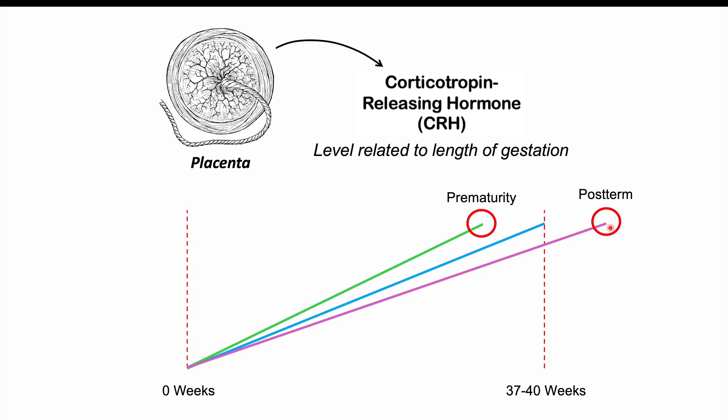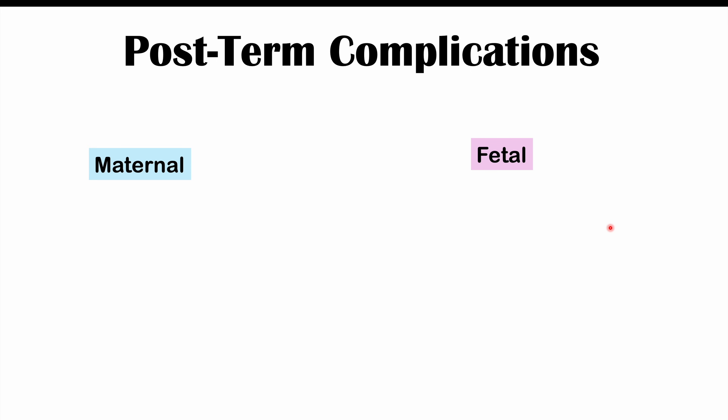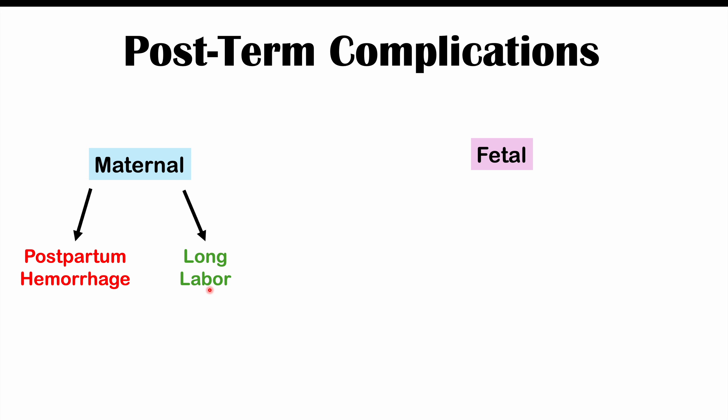Placental CRH is likely involved in fetal growth and fetal brain development, and its levels are correlated with when an infant is likely to be delivered. Regarding post-term complications, maternal complications include postpartum hemorrhage, prolonged labor, perineal tearing — because the infant becomes larger, causing more damage during delivery — and shoulder dystocia, the incidence of which also increases in mothers whose infants are delayed in delivering.